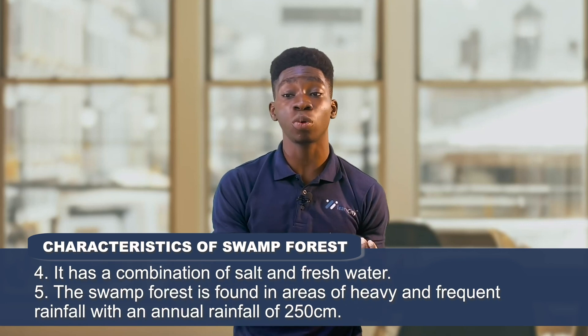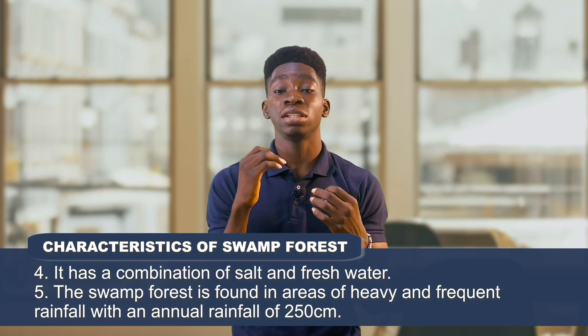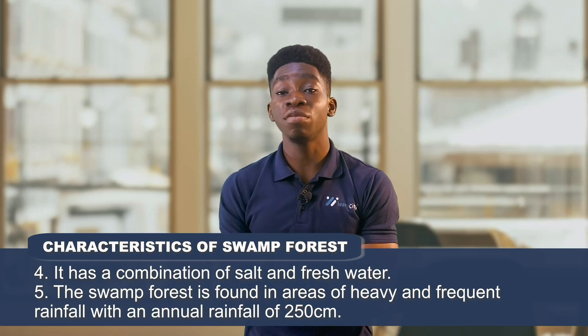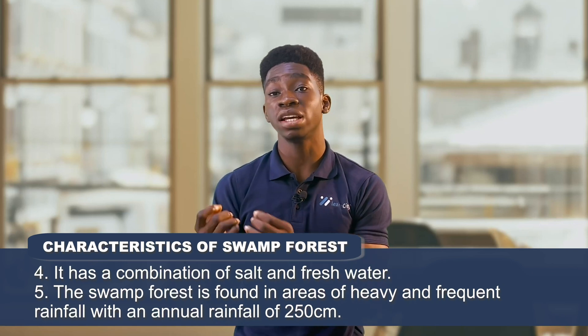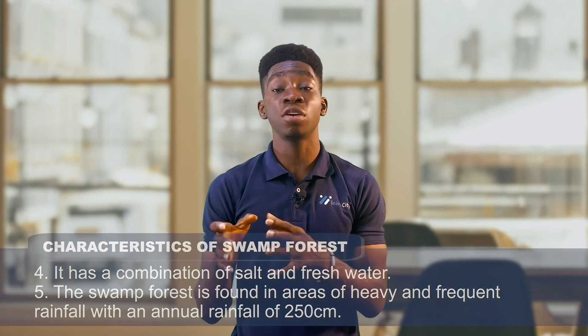The swamp forest is found in areas of heavy and frequent rainfall, with an annual rainfall of about 250 centimeters. Common plant species found in the mangrove forest are red mangrove, white mangrove, palm, and coconut. Common animal species found in this community include tilapia, oysters, crabs, snakes, birds, and kingfishes.